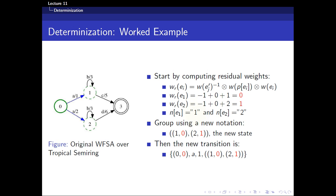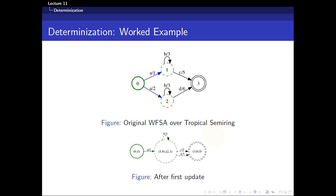We group state 1 with residual weight 0, and state 2 with residual weight 1, forming tuples (1, 0) and (2, 1). The first number represents the state and the second represents the residual weight. The new transition starts from state 0 with input 'a', weight 1, ending in the grouped destination state {(1,0), (2,1)}. We can now update the WFSA accordingly.